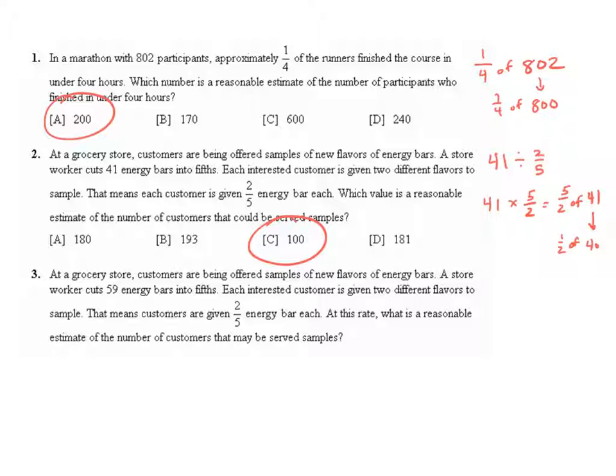Question three is the identical problem, except we have different numbers this time. So this time we're doing 59 energy bars, and we're again going to divide them into groups of two-fifths, two-fifths of an energy bar for each person.